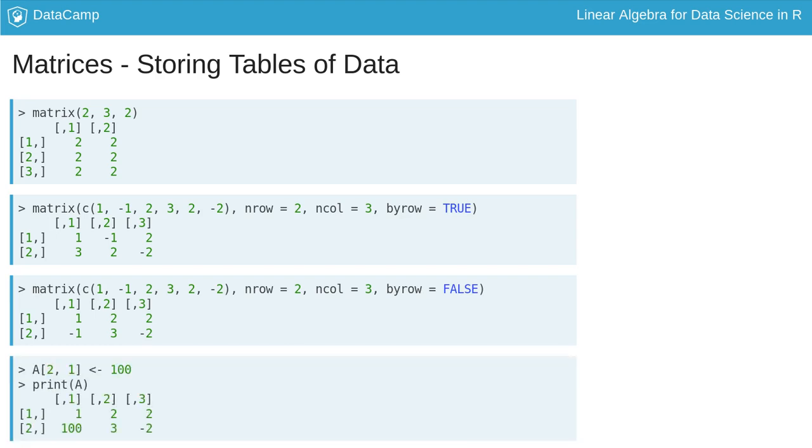Lastly, as with vectors, you can manually change any element of a matrix using the assignment arrow. Here the row index is followed by the comma and the column index. So changing the 2 1 element of matrix A can be done with the command A 2 comma 1 assignment arrow 100.